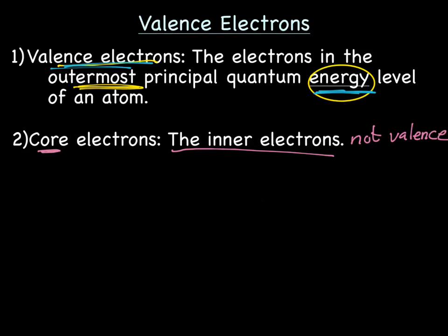Let's try another one — let's do magnesium. Why don't you hit pause, try to do the orbital diagram and the electron configuration for magnesium, and then determine the number of valence electrons. Hit play once you have it and we'll see how you did.